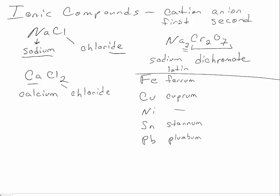These also have two possible charges that we're going to consider in this class. They could have a low or a high charge. Iron can be 2+ or 3+. Copper can be 1+ or 2+. Nickel can be 2+ or 3+. Tin can be 2+ or 4+, and lead can be 2+ or 4+.